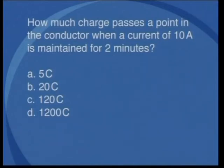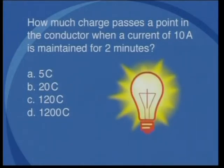Now I want you to try a few of these problems on your own. Please have a calculator, a pencil, and a piece of paper ready. I will give you a question with 4 possible answers. How much charge passes a point in a conductor when a current of 10 amperes is maintained for 2 minutes? Is it 5 coulombs, 20 coulombs, 120 coulombs, or 1200 coulombs? The answer is 1200 coulombs.